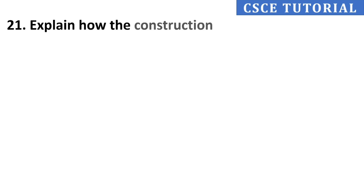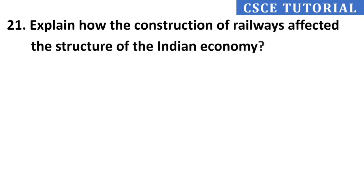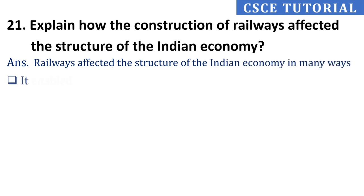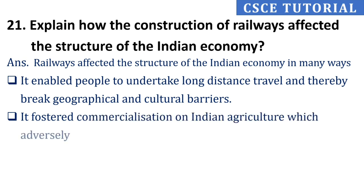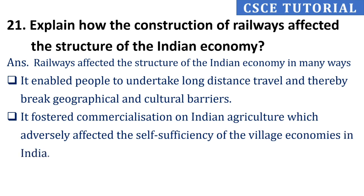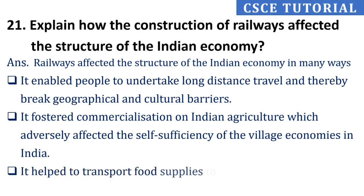Question 21: Explain how the construction of railways affected the structure of the Indian economy. Its answer is, railways affected the Indian economy in many ways. First, it enabled people to undertake long-distance travel and break geographical and cultural barriers. Second, it fostered commercialization of Indian agriculture, which adversely affected the self-sufficiency of the village economy. Third, it helped to transport food supplies to famine-affected areas quickly — transporting food grains from surplus areas to drought-affected regions became easier.